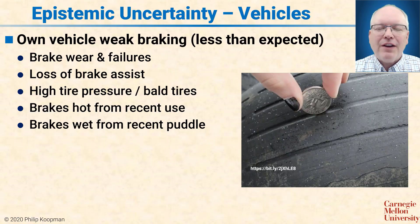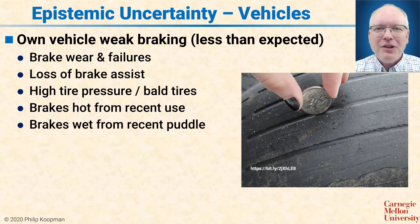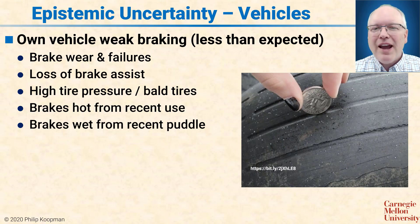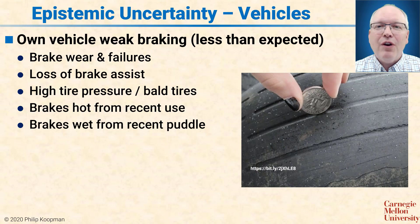All sorts of factors of both the environment and the vehicle will affect the ability of the trailing vehicle to brake as well as the lead vehicle. But beyond that, you have a problem of uncertainty. When you're working physics problems, you typically assume you know the value of all the variables. But in the real world, you don't actually know all the values precisely and somebody might just be guessing. You could have brake wear and failure, loss of brake assist, higher tire pressures or bald tires that impair your stopping ability, brakes hot from recent use, or wet from recent puddles. And the thing is, you don't actually know that these are all true until you start braking. That's true for human drivers as well as autonomous vehicles — sometimes when you press the brake pedal, it turns out the brakes aren't really there for you. And you're going to have to account for that somehow if you want to prove you're always following at a safe distance.